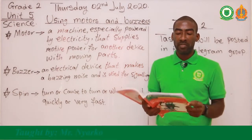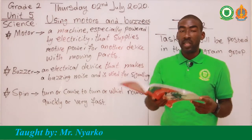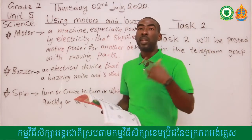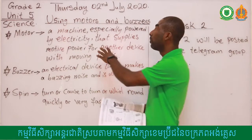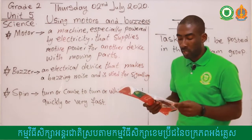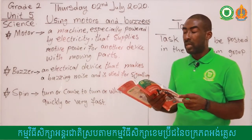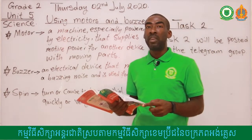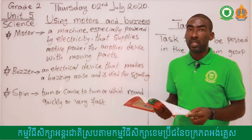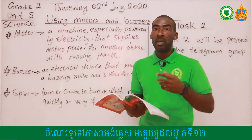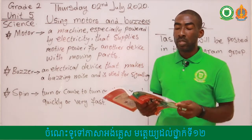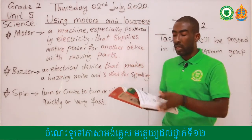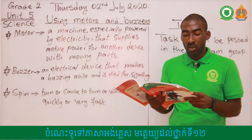Hello students, welcome to our second video. Our lesson is on using motors and buzzers from pages 54 and 55. We know that a motor can make things spin around. Examples of things that a motor can make spin include fans, washing machines, and air conditioners — all these things have a motor inside that makes those machines spin around.